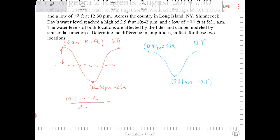So this would be 12.1 over 2, which is 6.05 feet. That's the amplitude for Washington.